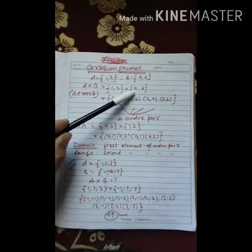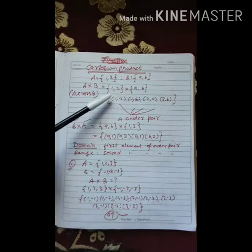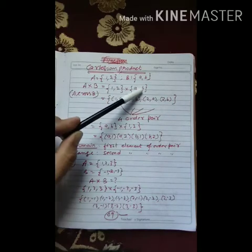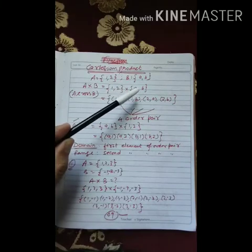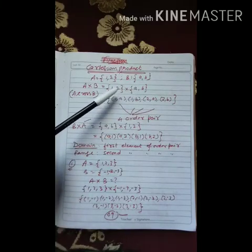Like in this way: (1, A) - this is first order pair. (1, B) - this is second order pair. (2, A) - this is third one. And the fourth one is (2, B).